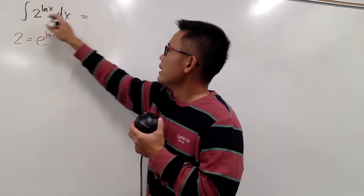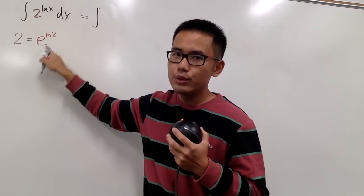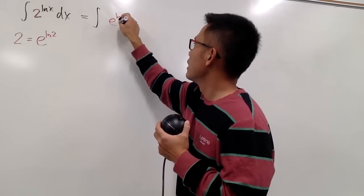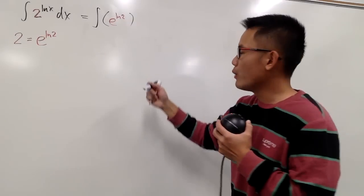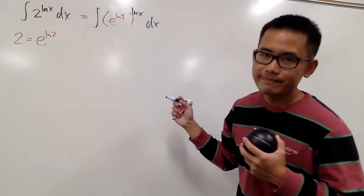So right here, as you can see, this is the integral and the 2, I'm going to write it as e to the ln 2 power. So let me put that down here. And then I will take that raised to the ln x power, right? And then this is dx, right here, of course.